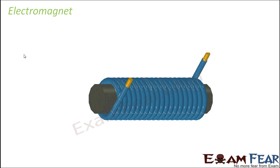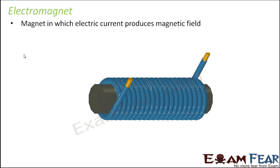Now that we are talking about the magnetic effects of current, let us talk about a special type of magnet called an electromagnet. The name itself tells us that it is a magnet which works in close association with electricity. It is a magnet in which electric current produces the magnetic field — the main principle because of which magnetic field is produced is nothing but the electric current.